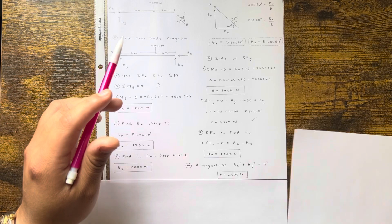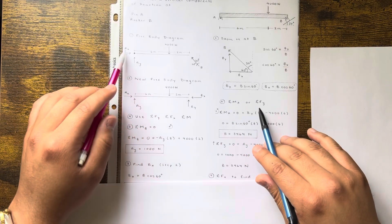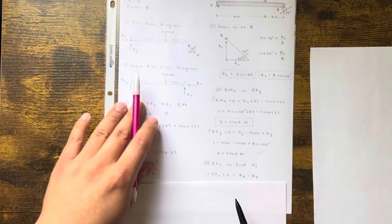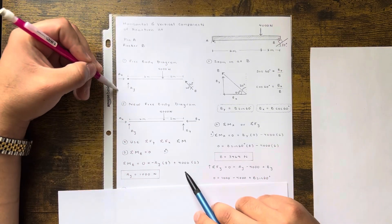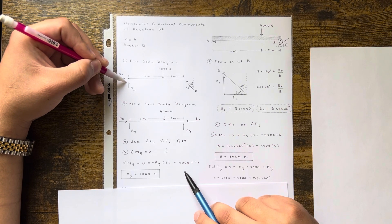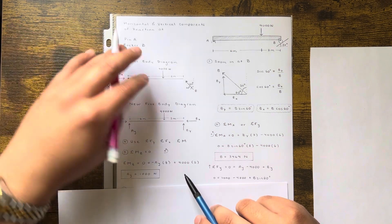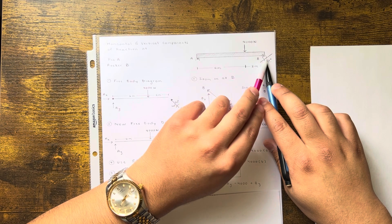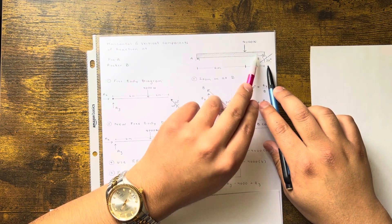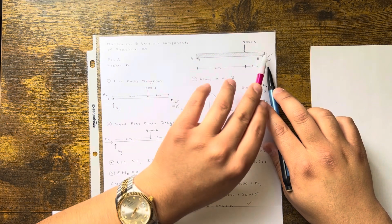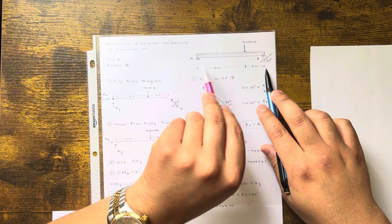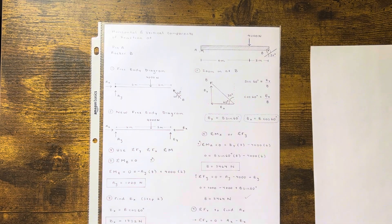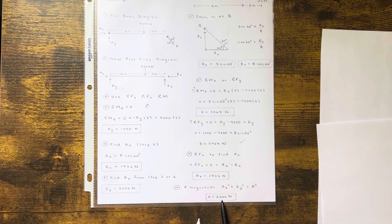To get the magnitude of the reaction at A, you use the Pythagorean theorem: Ax² + Ay² = |A|². There's an angled force at A pointing into quadrant two, which makes physical sense — with 4,000 N pushing down and Bx pushing inward, Ax has to react in the opposite direction to keep the system in equilibrium. The final answer is A = 2,000 N.